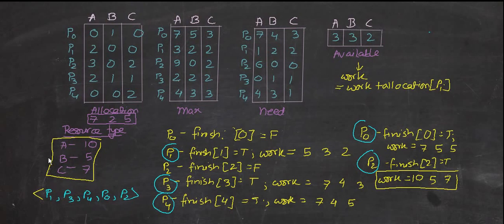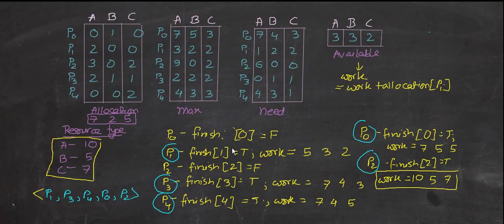If the available matrix is not given, you have resource types A, B, and C provided. You subtract the total allocation — which is the sum of allocation of A, B, and C — from the total resources to get the available matrix. The Banker's Algorithm states that after each process finishes, you update the available matrix, because a finished process releases its resources for other processes to use.